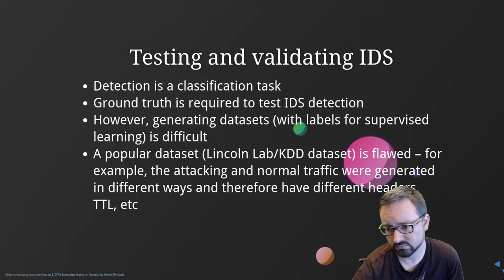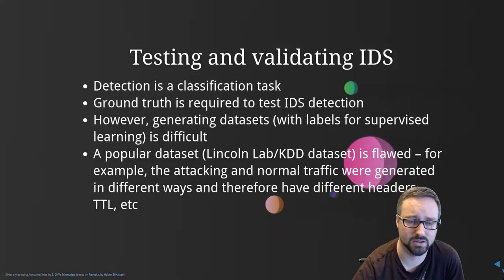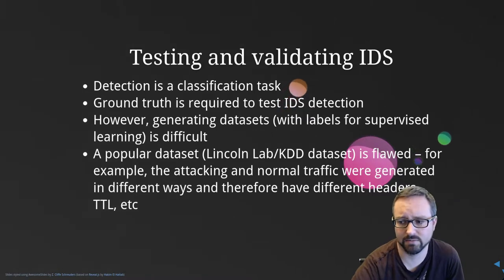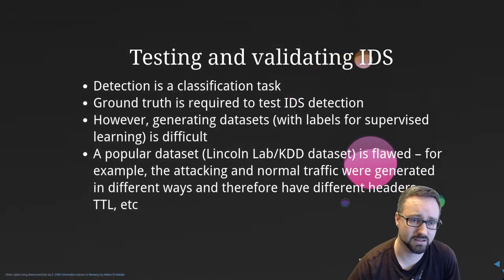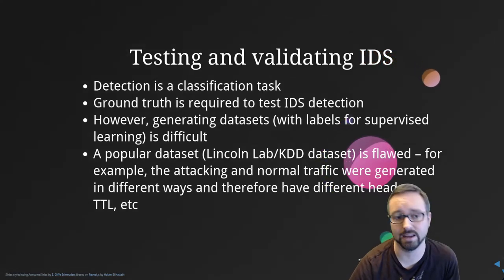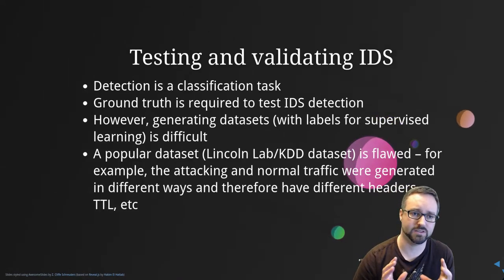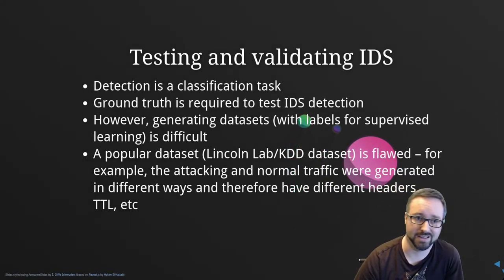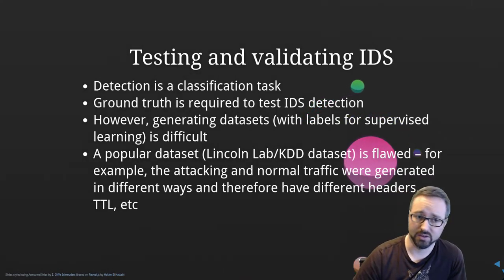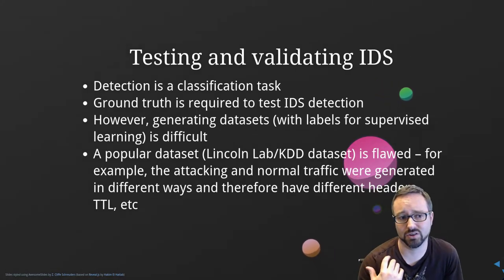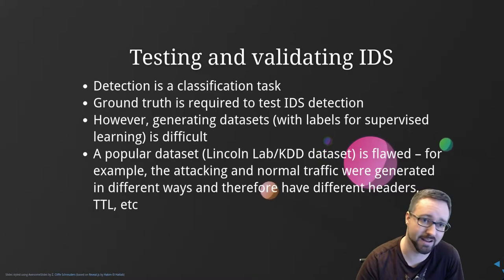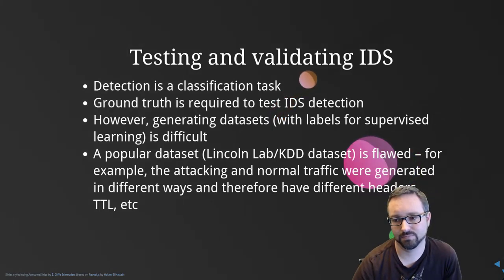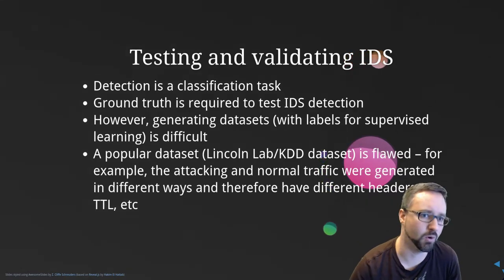There's a popular dataset called the Lincoln Lab KDD dataset that's been used in quite a bit of research, but it's actually very flawed. They generated the malicious and benign traffic in different ways, so there are differences between the attack and non-attack portions that aren't related to whether it was an attack. For example, the time-to-live on the packets was different, which means a machine learning model trained on it will treat time-to-live as important when it actually isn't.